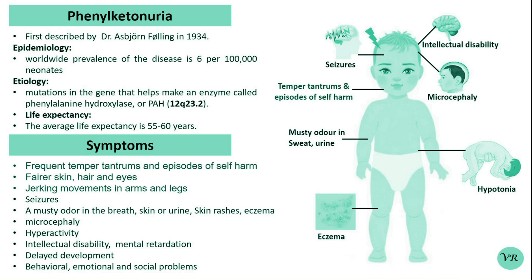Phenylalanine is an essential amino acid and its metabolism is crucial for maintaining various physiological processes. The primary pathway for Phenylalanine catabolism is through its conversion to tyrosine, another amino acid, which then enters various metabolic pathways.